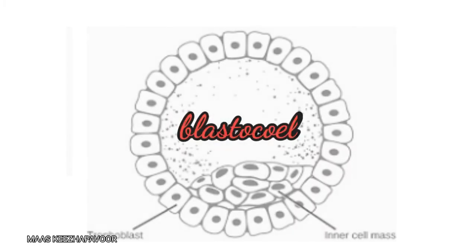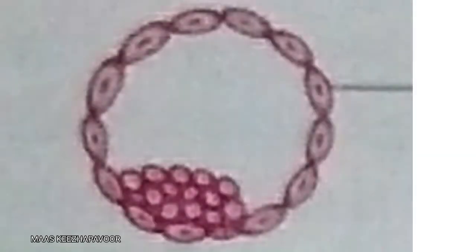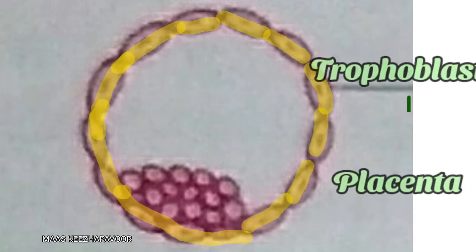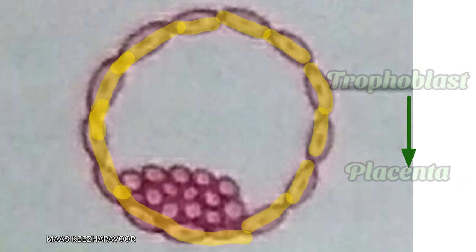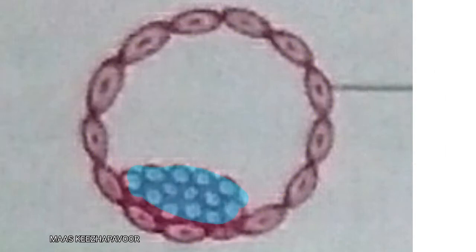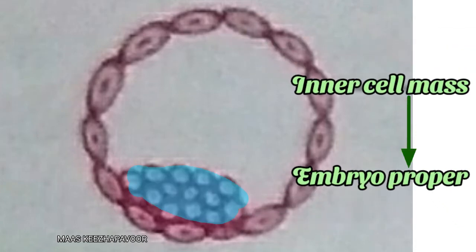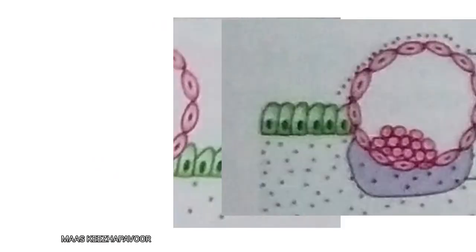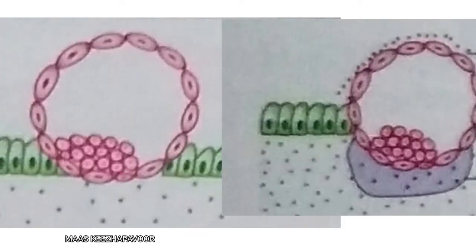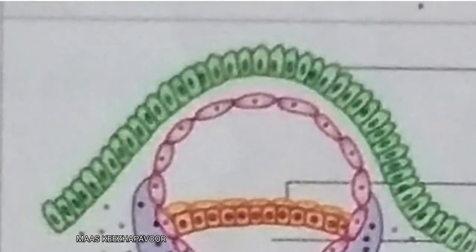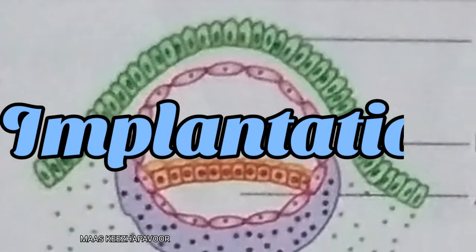A cavity appears in between these cells called blastocoel. Now the morula becomes blastula. The cells in the blastula arrange themselves into two groups: one single layer of cells in the periphery becomes trophoblast cells, which later forms placenta. The other cells form the inner cell mass, which later develops into the embryo proper. The trophoblast cells are capable of invading the nearby tissue.